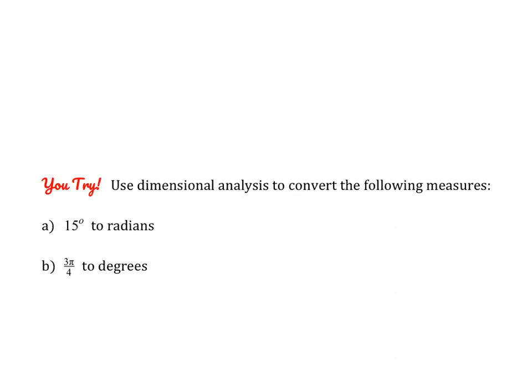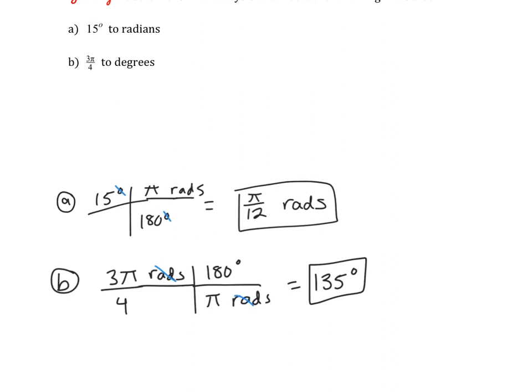Go ahead and pause the video to convert 15 degrees to radians and 3 pi over 4 radians to degrees. For 15 degrees: degrees goes on the bottom, pi radians on top, multiply across and simplify — you don't need to write the word radians but this shows it's in radians. For 3 pi over 4 radians: the unit starts in the numerator so we put radians in the denominator, apply the conversion factor, then multiply and simplify to get 135 degrees.